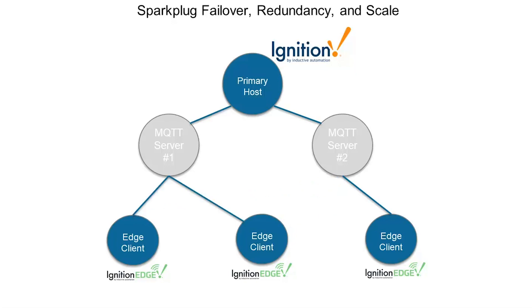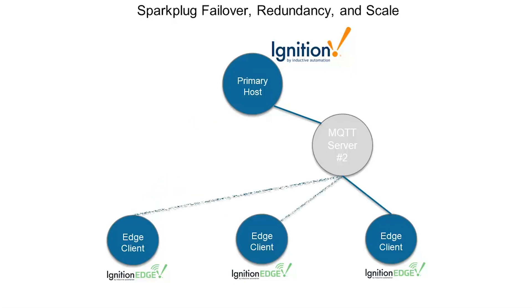Conversely, if that MQTT server went away, we would recognize that our MQTT session went away and walk over to other available MQTT servers. Using MQTT as our OT infrastructure, achieving high availability, redundancy, and scale is simply a matter of adding one or more MQTT brokers to your infrastructure.